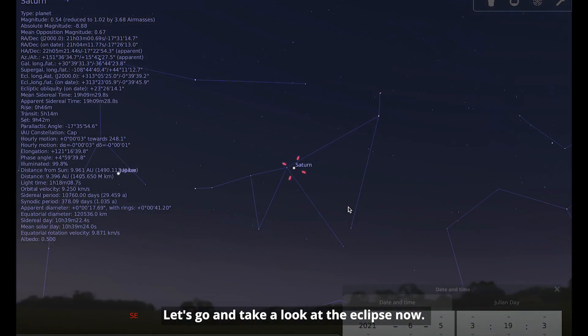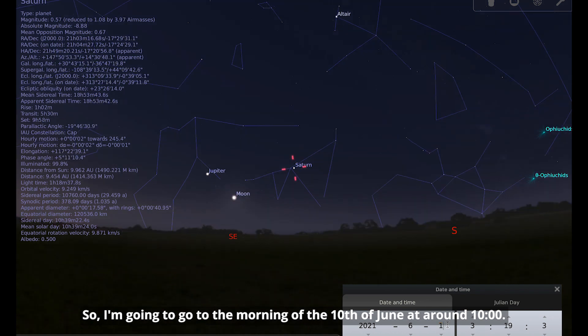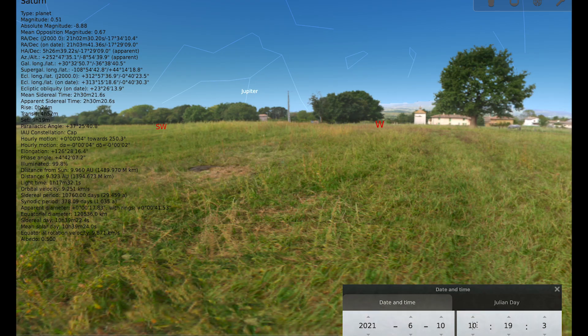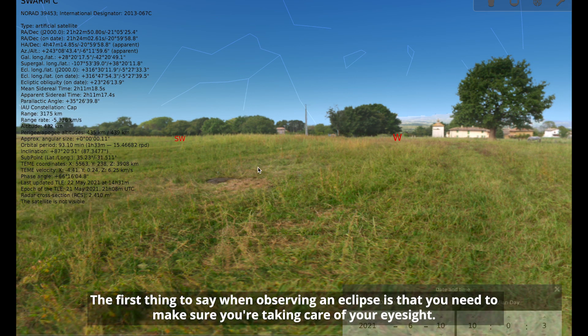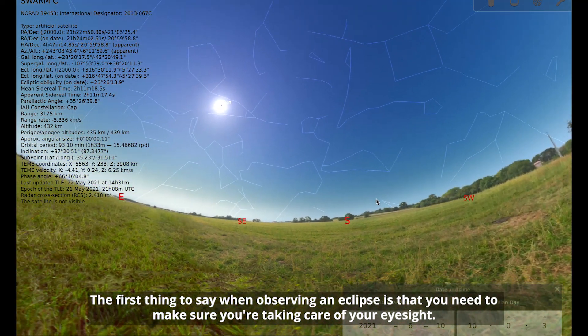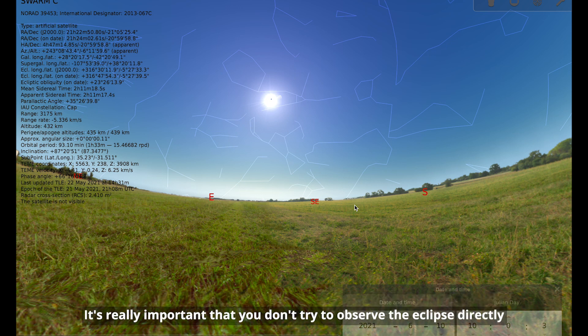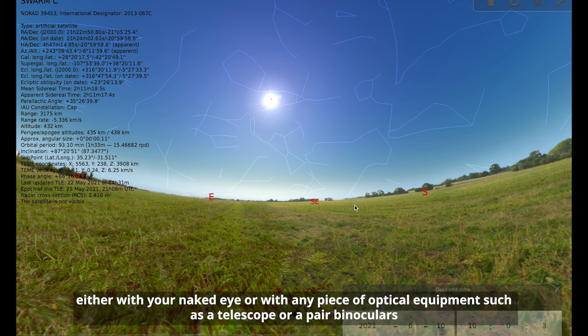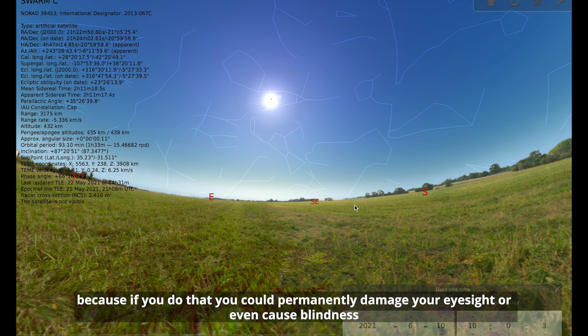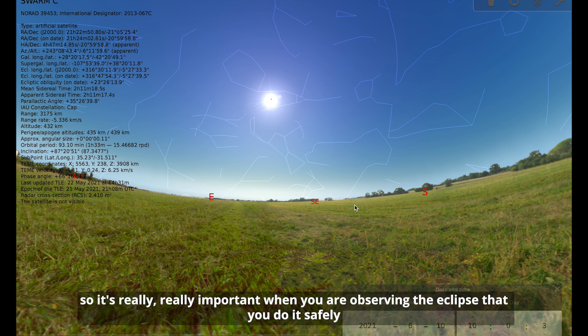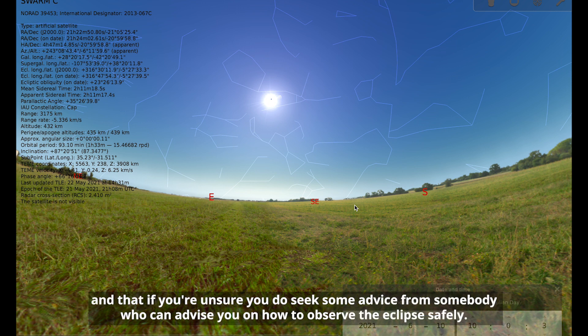Let's go and take a look at the eclipse now. So I'm going to go to the morning of the 10th of June at around 10 o'clock. The first thing to say when observing an eclipse is that you need to make sure you're taking care of your eyesight. So it's really, really important that you don't try to observe the eclipse directly, either with your naked eye or with any piece of optical equipment, such as a telescope or a pair of binoculars. Because if you do that, you could permanently damage your eyesight or even cause blindness.